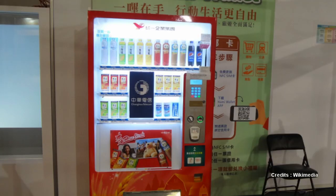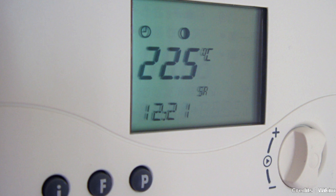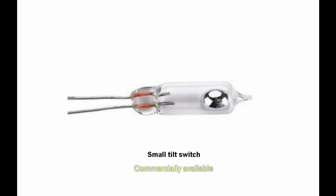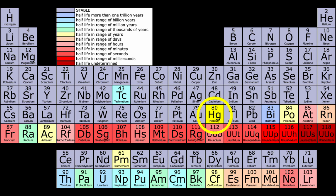Tilt switches are used in vending machines, thermostats, and other devices. Tilt or moment of the device is detected using some mechanical arrangement or mercury.